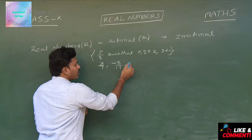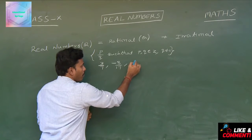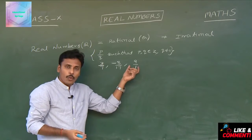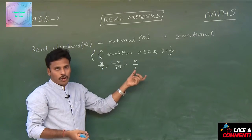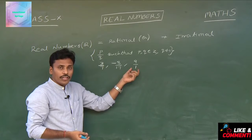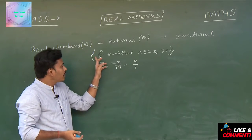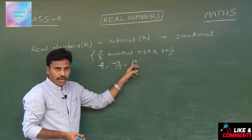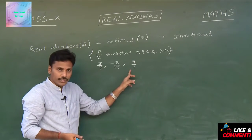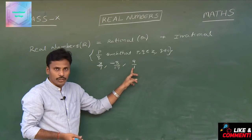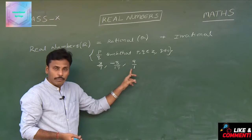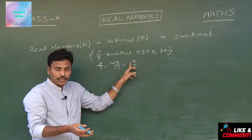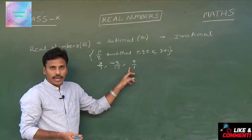Now let us look at the number 9 divided by 1. Whether it is rational or not — checking by the form P by Q, P is 9 and Q is 1. Both are integers and the denominator is non-zero, so clearly 9 by 1 is a rational number. And as a calculation, 9 by 1 is simply 9.